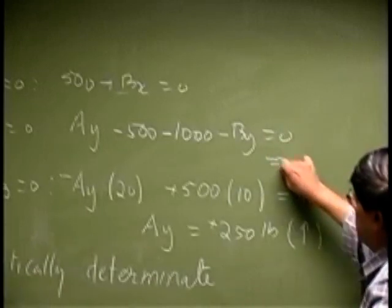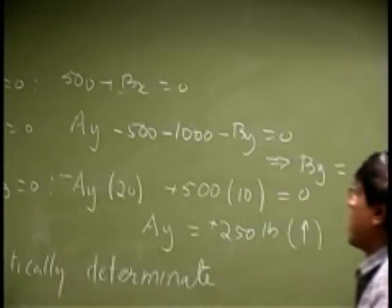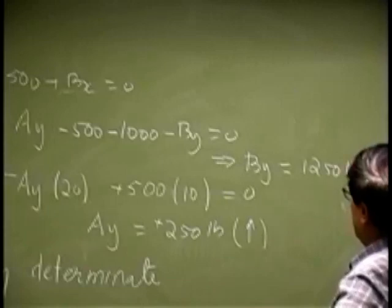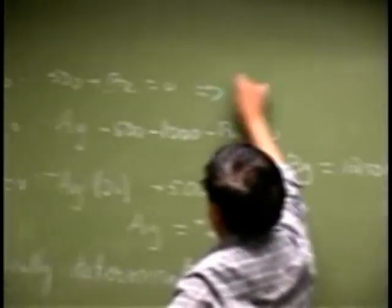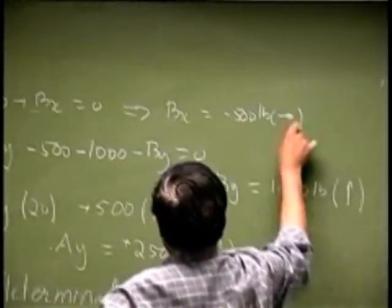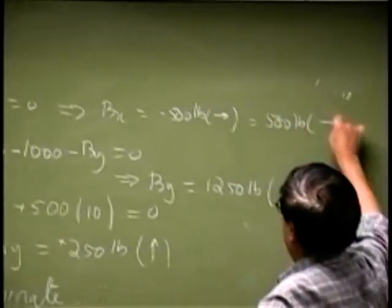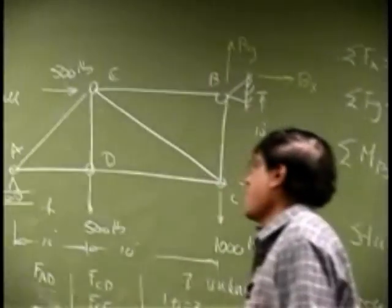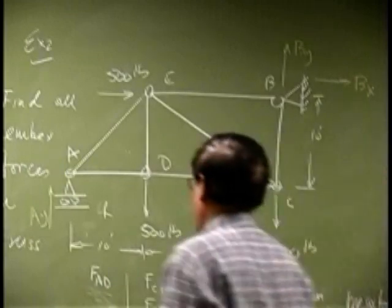Then from here you could find By. That is 250. So that is 1500 minus 250, that is 1250 pounds. That also keeps going up. So you get 500 pounds and change direction and make it right to left. That is all we get when we look at the overall equilibrium of this problem.